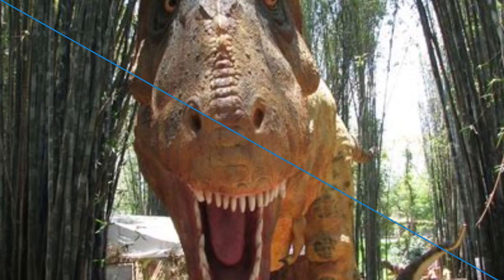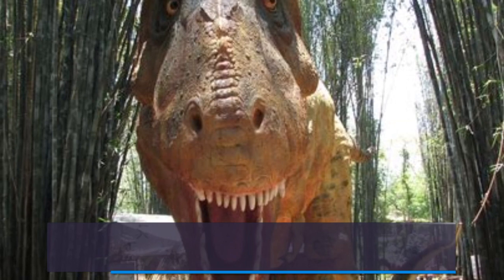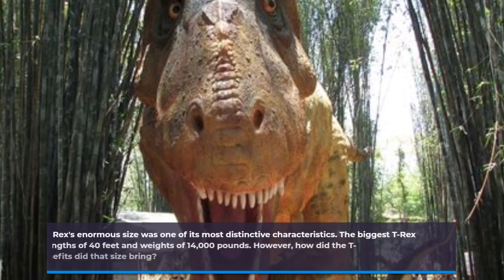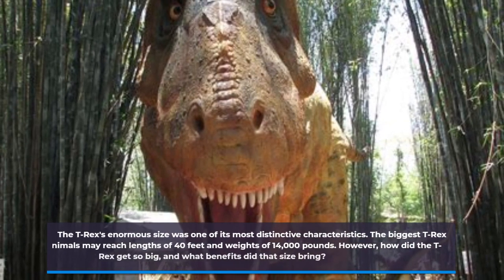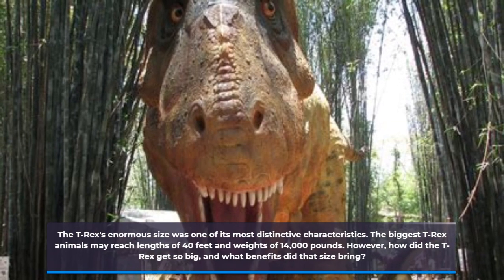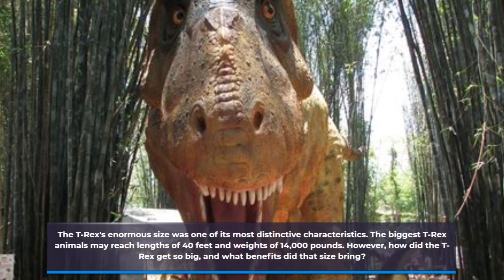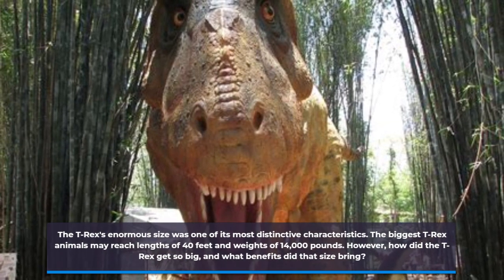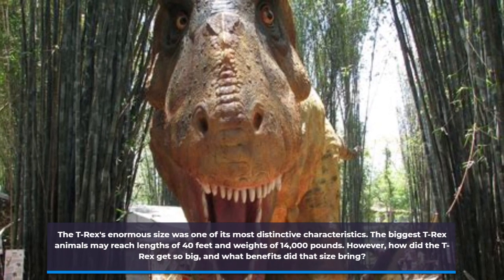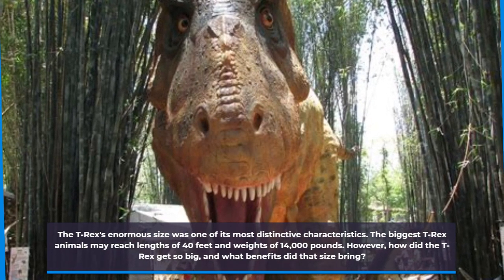The T-Rex's enormous size was one of its most distinctive characteristics. The biggest T-Rex individuals may reach lengths of 40 feet and weights of 14,000 pounds. However, how did the T-Rex get so big, and what benefits did that size bring?